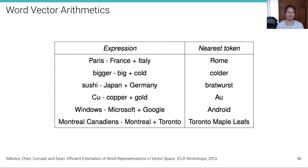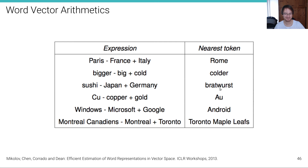We can also do fun word vector arithmetic with these embeddings. For example: the vector for 'Paris' minus 'France' plus 'Italy' gives 'Rome' as the nearest token. 'Sushi' minus 'Japan' plus 'Germany' gives 'Bratwurst.' This is fun but also shows that the semantics learned by word embeddings are actually quite meaningful.